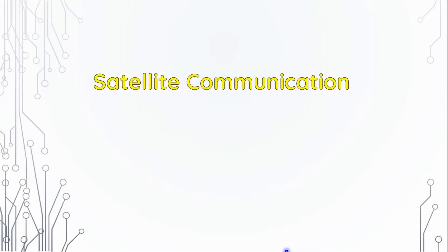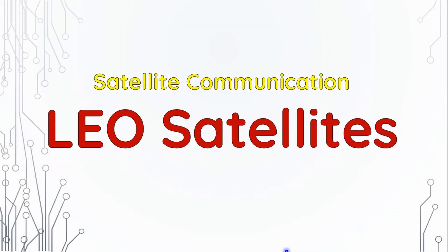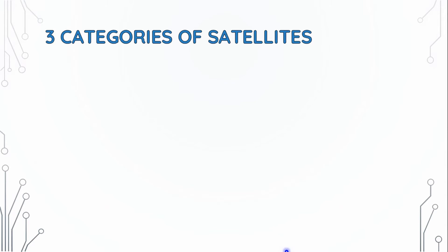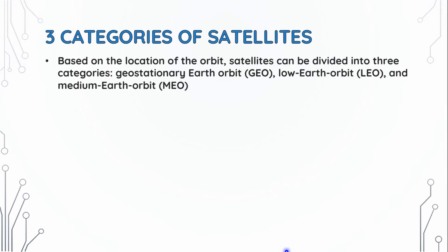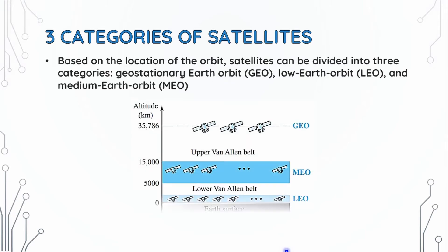Today we have satellite communication with LEO satellites. We have three categories of satellites based on the location of the orbit. The Earth surface classification includes LEO, which is Low Earth Orbit; MEO, which is Middle Earth Orbit; and GEO, which is Geostationary Earth Orbit. In the last video, GEO and MEO were covered, and in this video we are going to cover LEO.